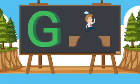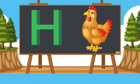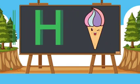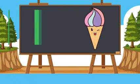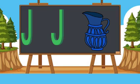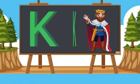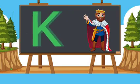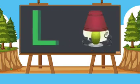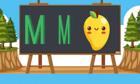G for gap, H for hen, I for ice cream, J for jug, K for king, L for lamb, M for mango.